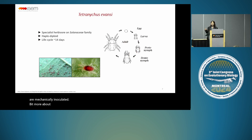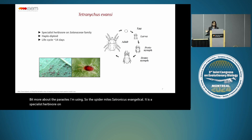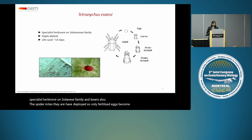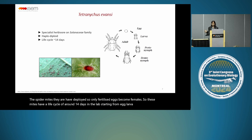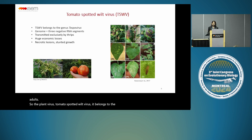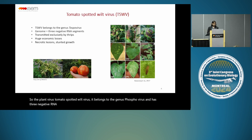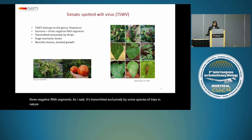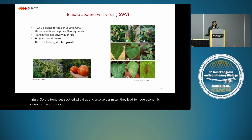A bit more about the parasites I'm using. Tetranychus evansi is a specialist herbivore on the Solanaceae family and beans. The spider mites are haplo-diploid, so only fertilized eggs become females. These mites have a life cycle of around 14 days in the lab, starting from egg, larvae, to nymph stages and adults. Tomato spotted wilt virus belongs to the genus Tospovirus and has three negative RNA segments — transmitted exclusively by some species of thrips in nature. Both the tomato spotted wilt virus and spider mites lead to huge economic losses for crops, amounting to billions for agriculture.